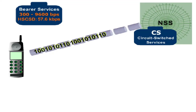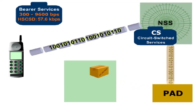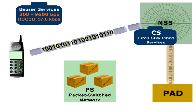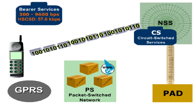A converter, called packet assembler disassembler or PAD, is used to adapt these signals to the packet switched mode in public data networks, for example the internet. With GPRS, a total packet switched transmission is provided between all data terminal equipment at a maximum bit rate of 171.2 kilobits per second.